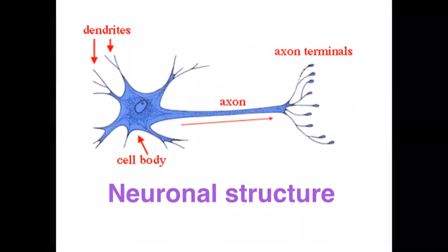In this clip we're going to focus on the function of dendrites, axons, neurotransmitters, and the synapse, and we're going to look at how these entities change as a result of memory formation.